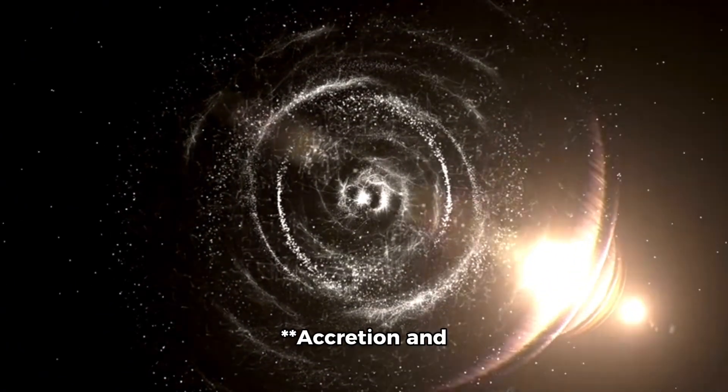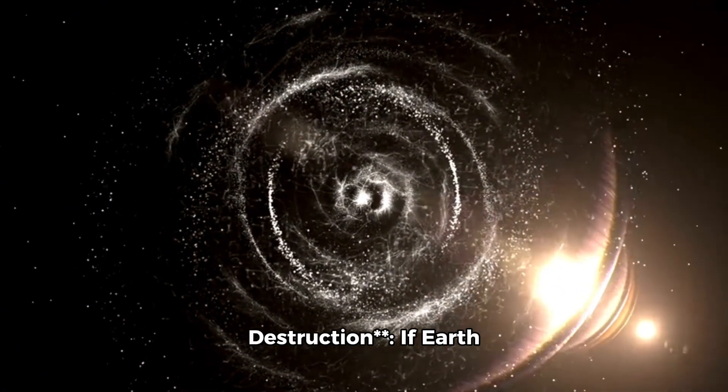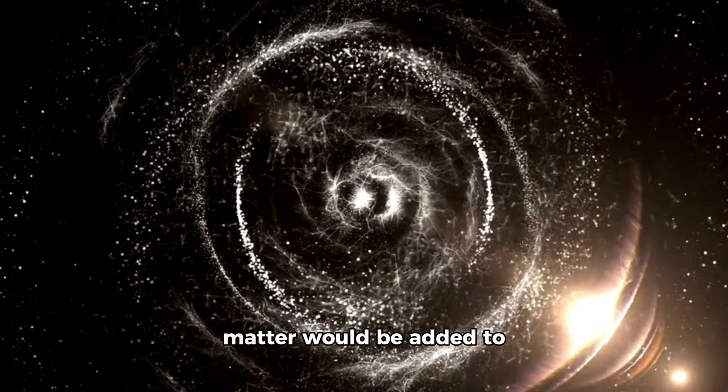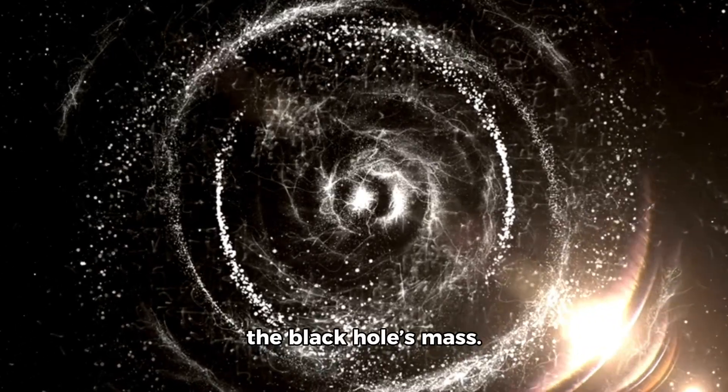Event horizon: accretion and destruction. If Earth were to cross the event horizon, it would be torn apart and its matter would be added to the black hole's mass.